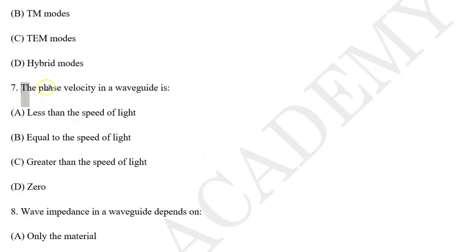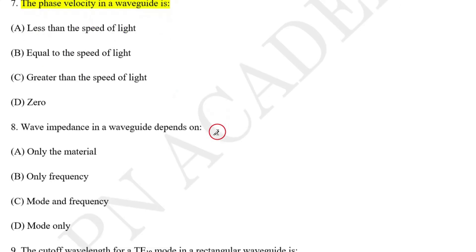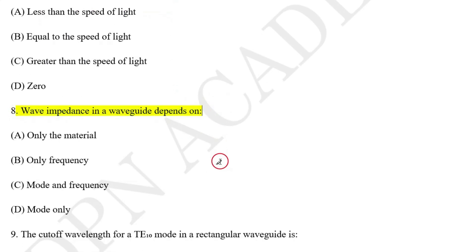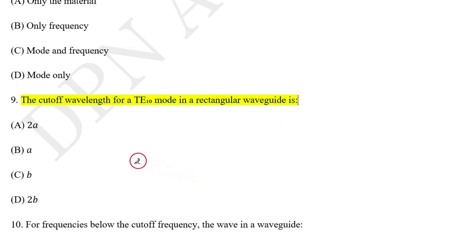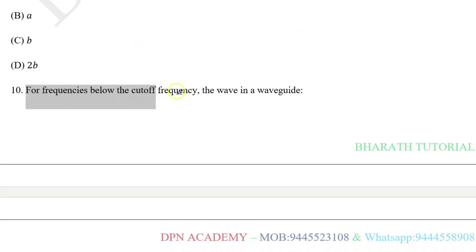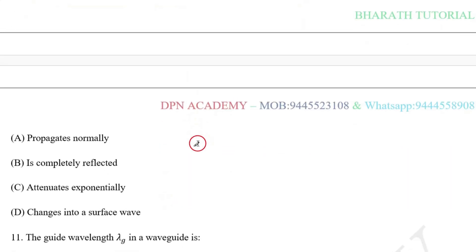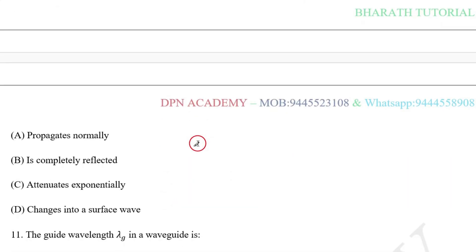Question number seven: The phase velocity in a waveguide is? Question number eight: Wave impedance in a waveguide depends on? Question number nine: The cutoff wavelength for TE10 mode in a rectangular waveguide? These questions are repeatedly asked in previous exams. Question ten: For frequency below the cutoff frequency, the wave in a waveguide — these are all the deciding factors.